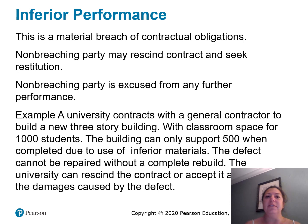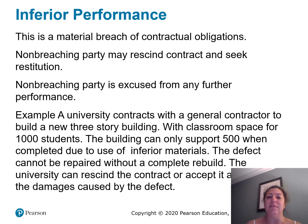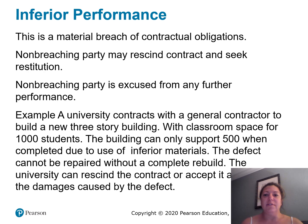Inferior performance is different — this is a material breach of contractual obligations. The non-breaching party may rescind the contract and seek restitution, and is excused from any further performance. For example, a university contracts with a general contractor to build a new three-story building with classroom space for 1,000 students. The building can only support 500 students when completed due to use of inferior materials, and the defect cannot be repaired without a complete rebuild. The university can either rescind the contract or accept it and deduct the damages caused by the defect.